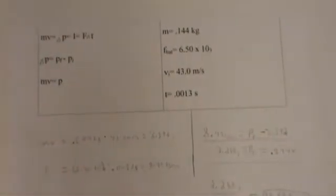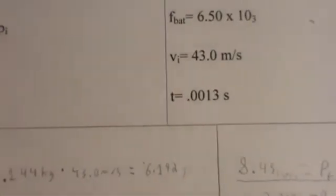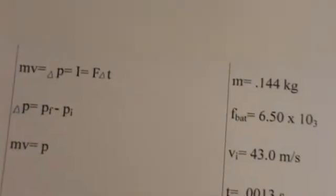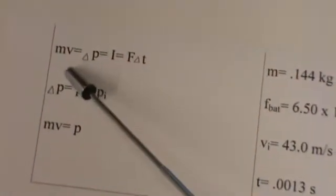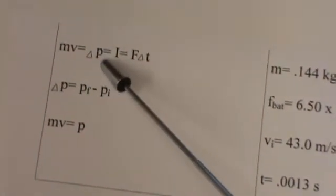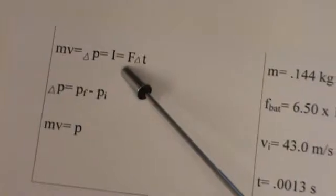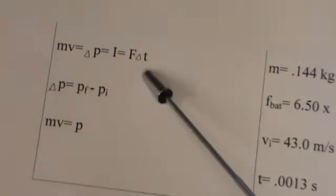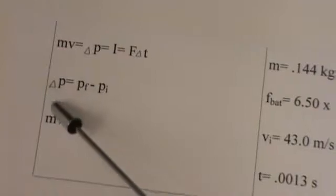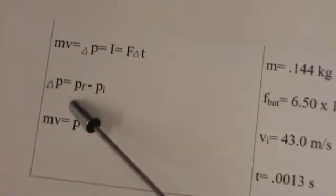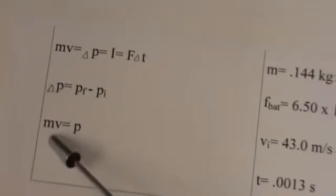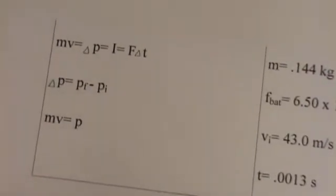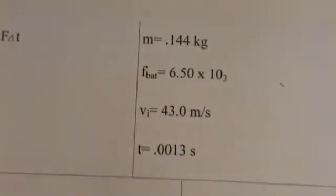Some equations that we might need are: mass times velocity equals the change of momentum, which is equal to impulse, which is equal to force times time. Delta momentum equals final momentum minus initial momentum. And mass times velocity equals momentum.